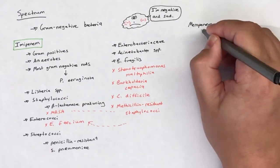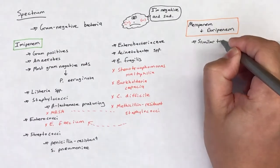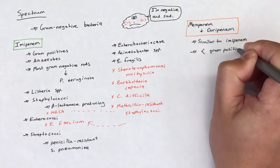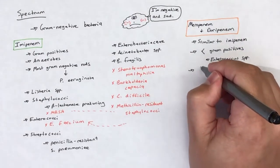Both meropenem and doripenem are similar in their spectrum of activity to imipenem. Meropenem and doripenem are slightly less active against gram-positives, especially Enterococcus species, and slightly more active against gram-negatives when compared to imipenem.